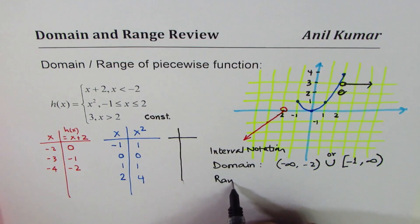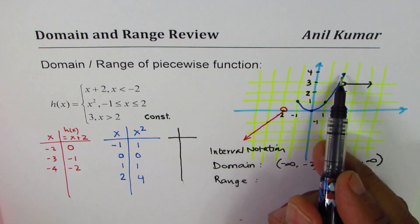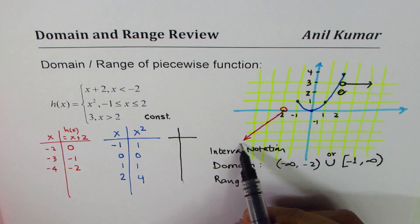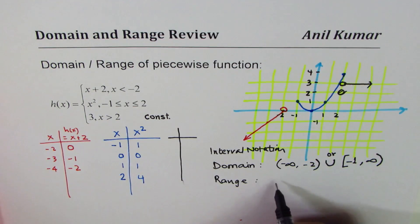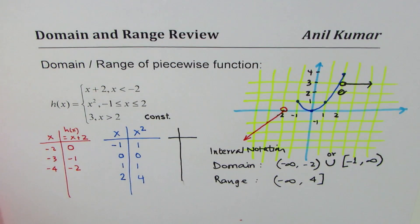How about the range? Range is from minus infinity to, so it is up to 4. Do you see that? So the maximum value is 4 for this given piecewise function. Minimum is extending towards minus infinity. We can write this as minus infinity to 4, where 4 is included.